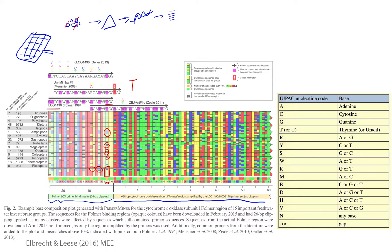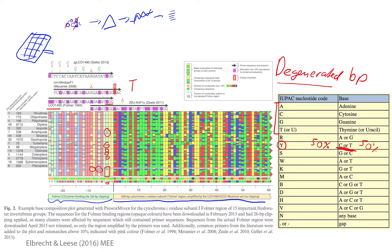One workaround is the introduction of degenerated bases in the primer sequence. In a table of IUPAC codes we see the standard four bases, and additionally we can use degenerate codes where two base pairs occupy the same position. For example, inserting a Y in the primer sequence gives C for 50% of sequences and T for the other 50%. This is called degeneracy in primers.